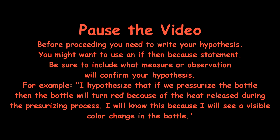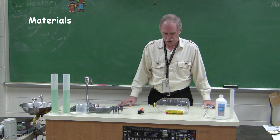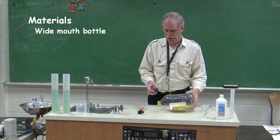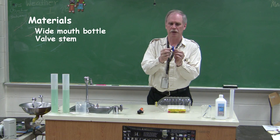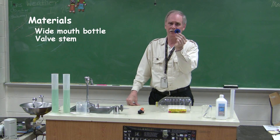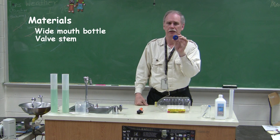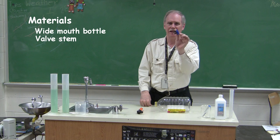For our experiment, here is what you'll need. You will need a wide mouth bottle, similar to this one — this happens to be a Mott's apple juice bottle. You'll also need a valve stem, which can be obtained at a local auto parts store. You're going to cut or drill a hole in the bottle's cap a little smaller than the diameter of the valve stem.